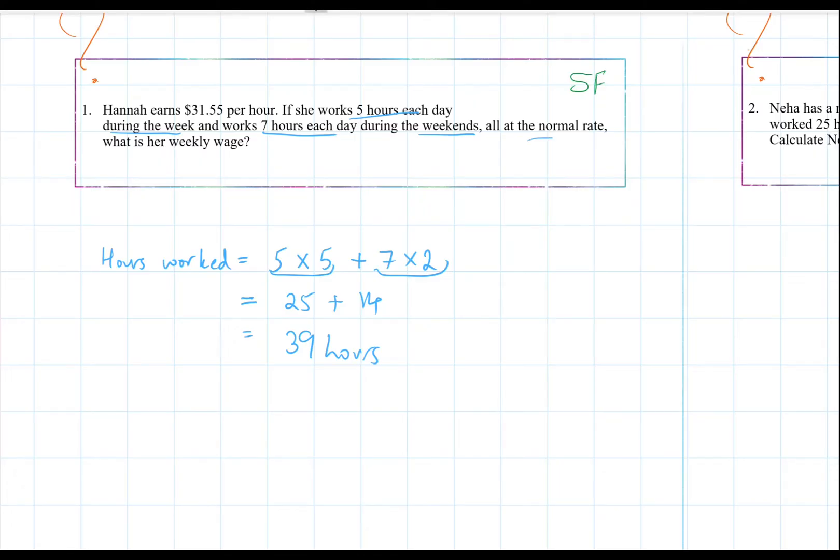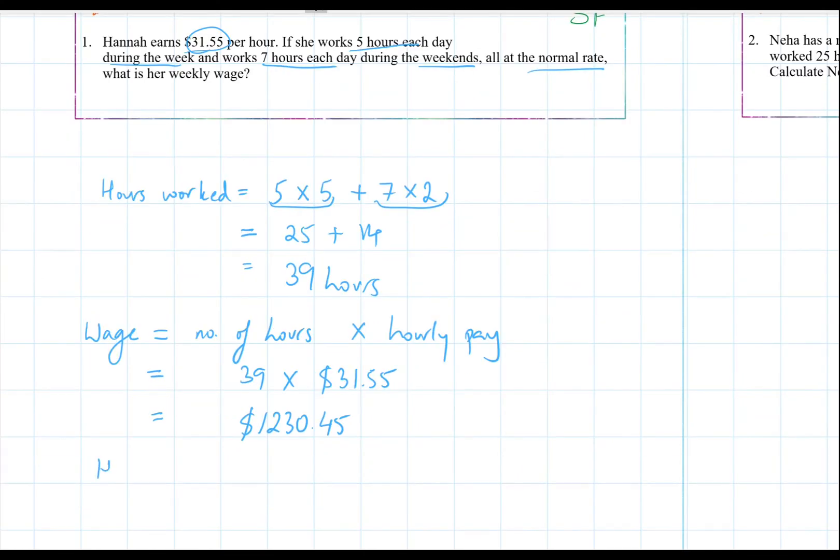And this is all paid at the normal rate of $31.55. So her weekly wage, which is number of hours worked times your hourly pay, that's going to be 39 times $31.55, which is $1,230.45.